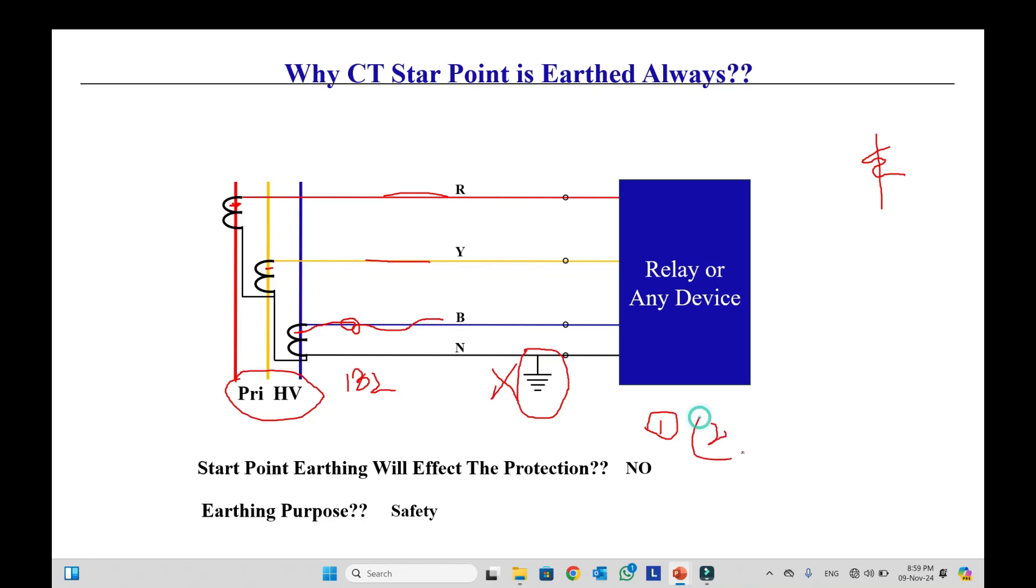In the running system, in the healthy system, we have this high voltage in the primary side and very low voltage in the secondary side. So there is a capacitance due to insulation. There is a capacitance between primary and secondary. Due to this capacitance, our secondary may get some voltage induced. Our secondary side may get some voltage from the primary side.